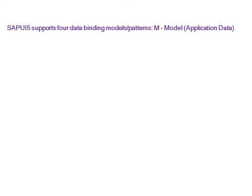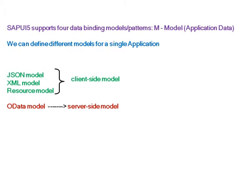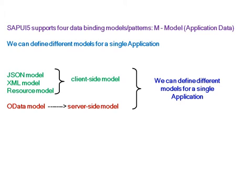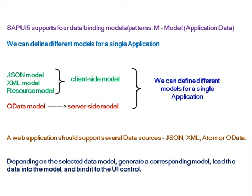SAPUI5 supports four data binding models or patterns. 'M' stands for model, that is application data, and we can define different models for a single application. The first is JSON model, the second is XML model, the third is Resource model — all three are client-side models. The last is OData model, which is a server-side model. A web application should support several data sources like JSON, XML, ATOM, or OData. Depending on the selected data model, generate a corresponding model, load the data into the model, and bind it to the UI control.